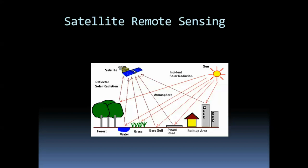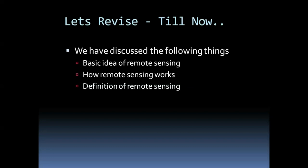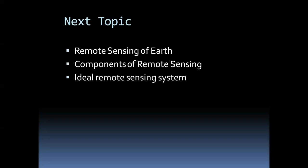So we have covered what remote sensing is, how it works, real-life examples like the working of the eye and the TV remote, and the definition of remote sensing. In the next video, we are going to see remote sensing of Earth — how it functions, the different components, and the requirements of an ideal remote sensing system. Thank you for watching.